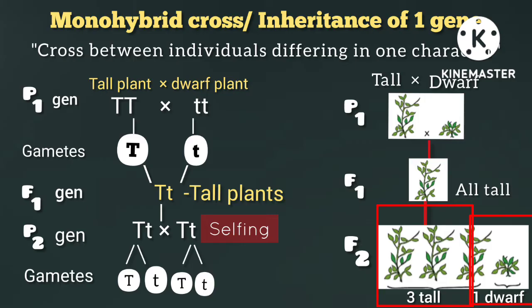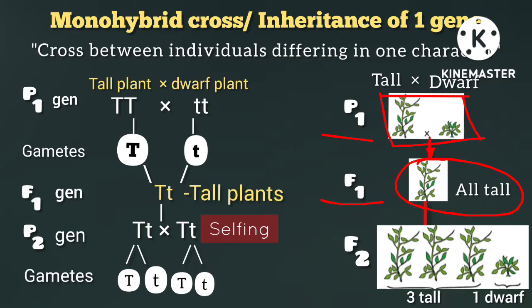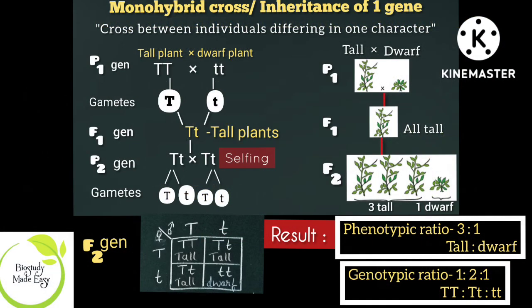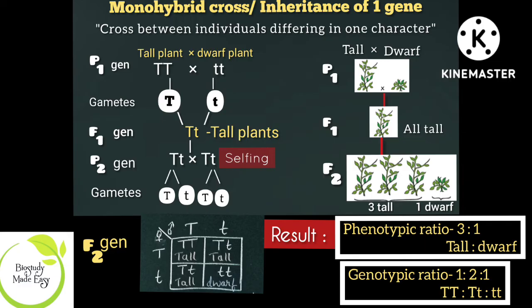In the F2 generation, we have homozygous tall (TT), heterozygous tall (Tt), and homozygous dwarf (tt). The F1 generation plants are all tall. After self-pollination, the F2 generation shows 75% tall and 25% dwarf plants. To represent this, we use a Punnett square with one parent providing capital T and small t gametes, and the other also providing capital T and small t gametes.